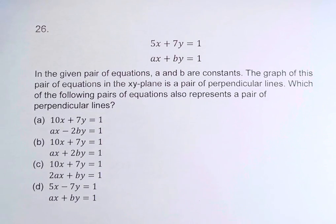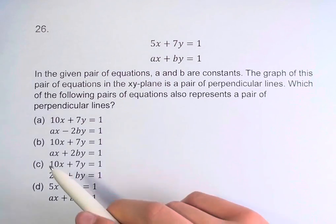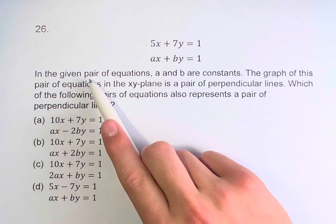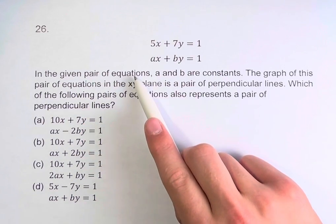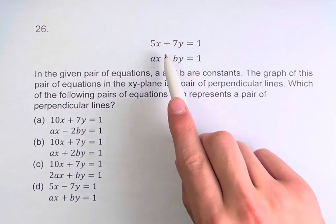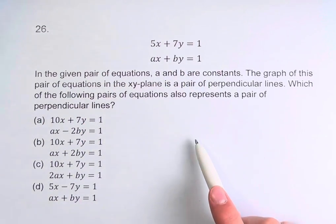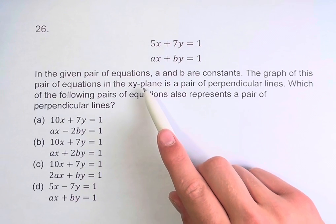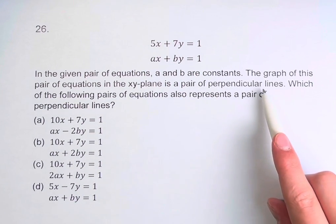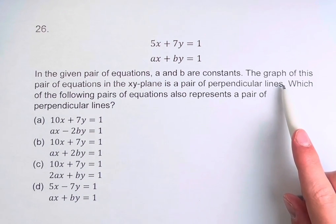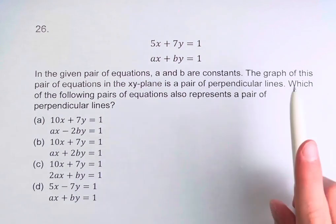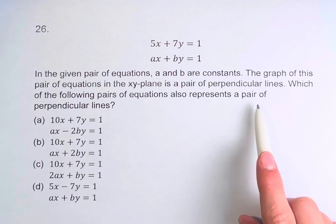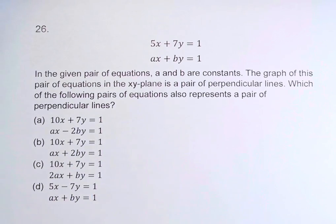Hello, and welcome back to another video. In this problem, we're told that in the given pair of equations, A and B are constants. The graph of this pair of equations in the x-y plane is a pair of perpendicular lines. We're asked which of the following pairs of equations also represent a pair of perpendicular lines.